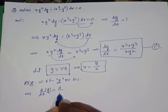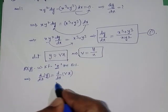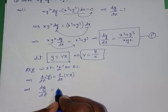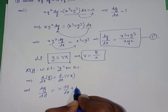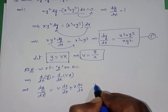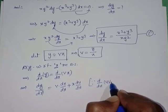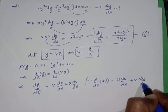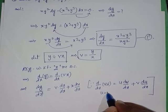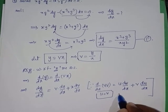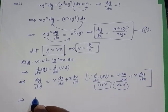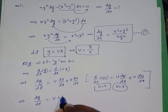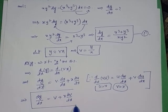Differentiating y = vx with respect to x: d/dx(y) = d/dx(vx). Applying the product rule — d/dx(uv) = u·dv/dx + v·du/dx — we get dy/dx = v·(dx/dx) + x·(dv/dx), which simplifies to dy/dx = v + x·dv/dx.